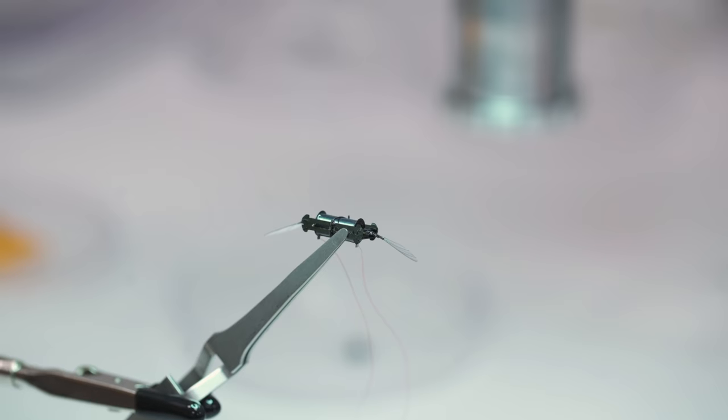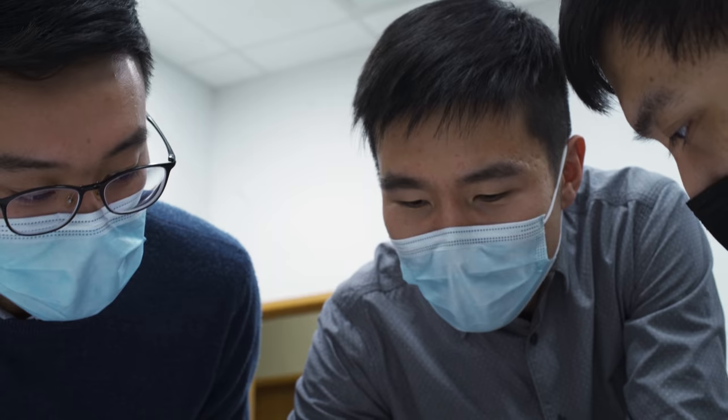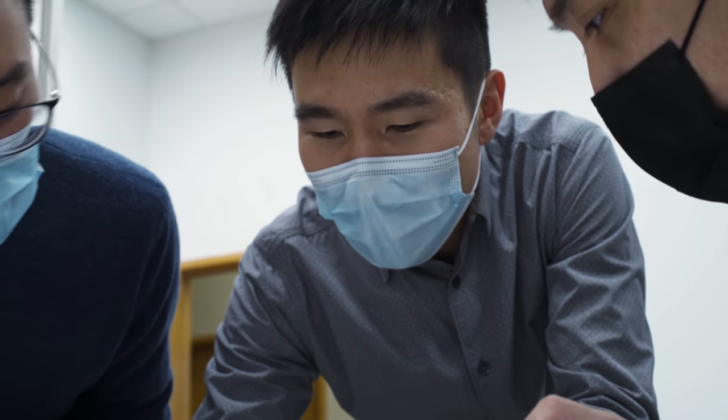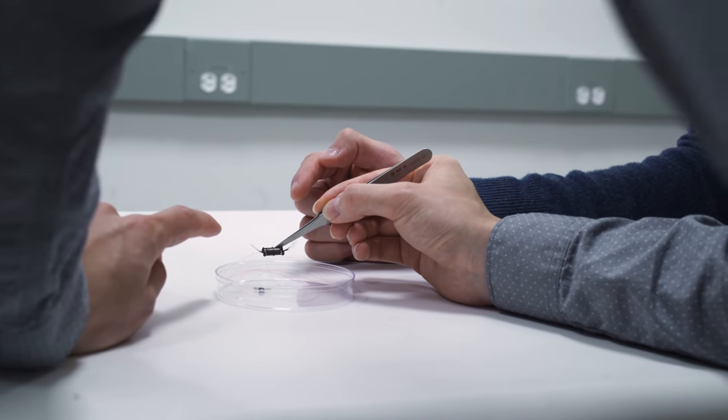The more surface area the actuator has, the less voltage is required. So the researchers built these artificial muscles by alternating between as many ultra-thin layers of elastomer and electrode as they could.